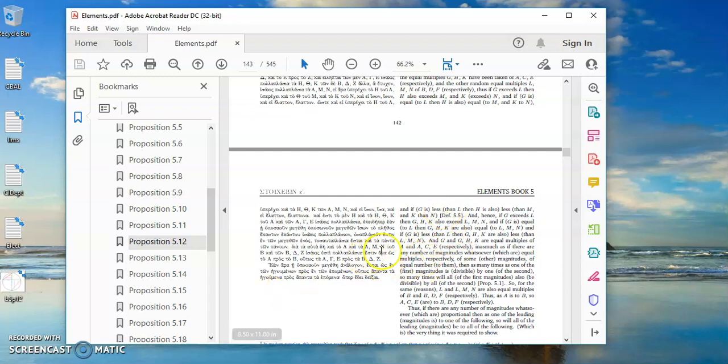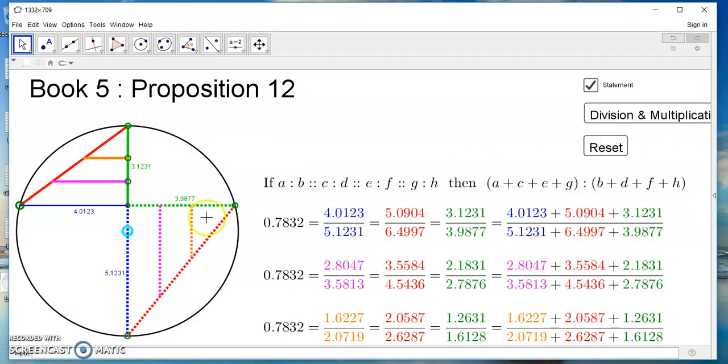So if Euclid had stuck to similar triangles to prove this, the proof would indeed have been a lot easier. So let's look at the proof as we see it here.